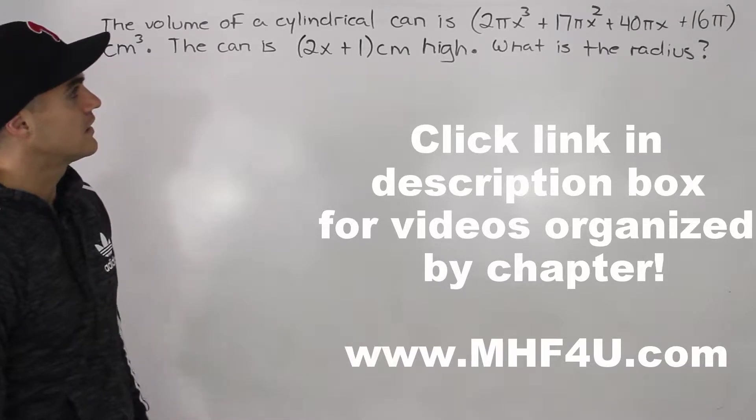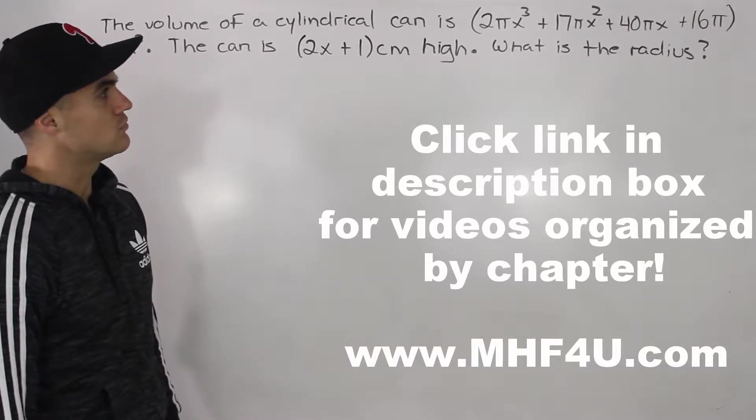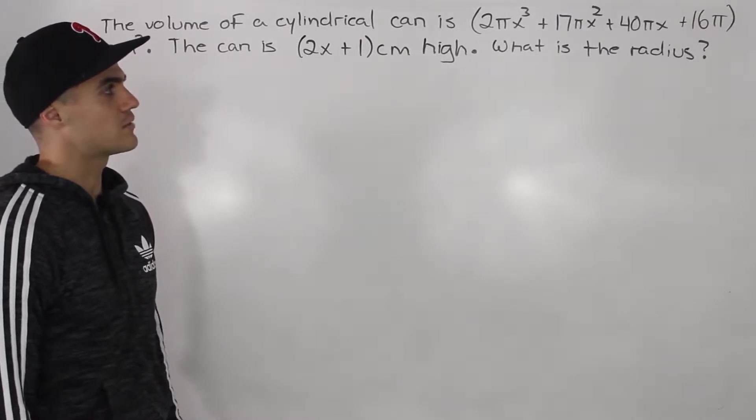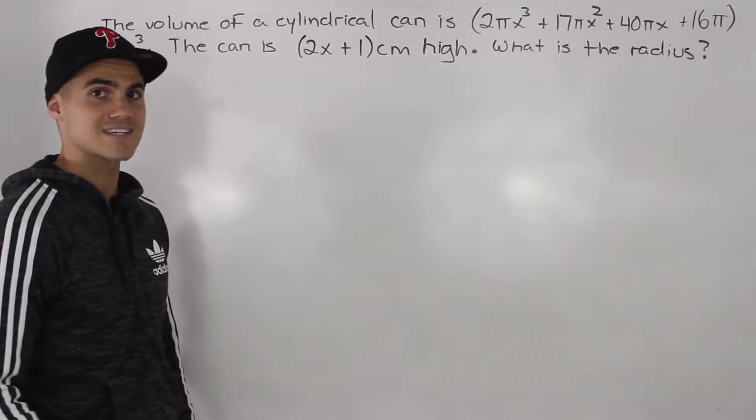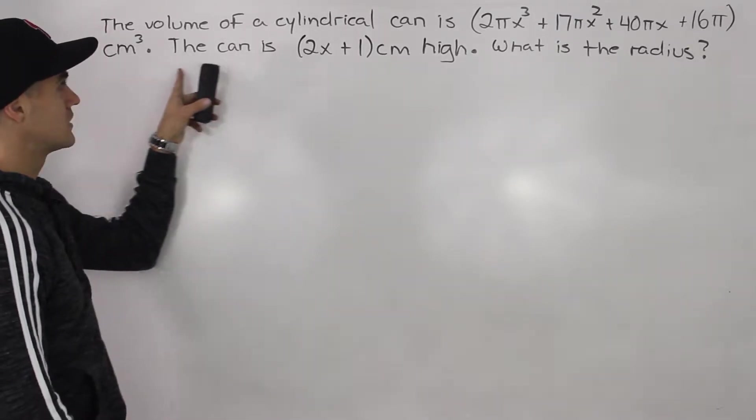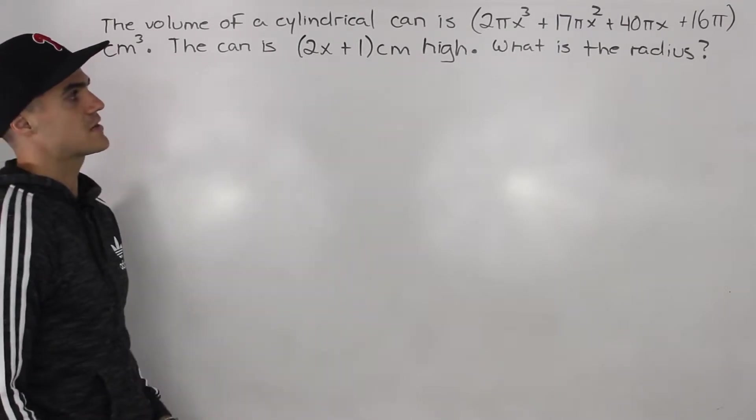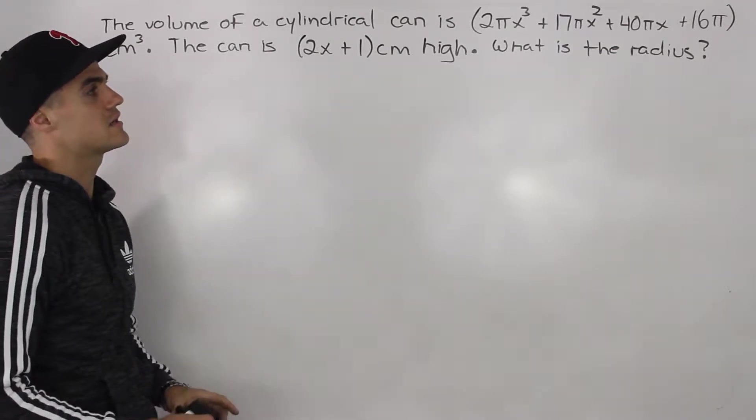The volume of a cylindrical can is 2πx³ + 17πx² + 40πx + 16π cubic centimeters. The can is (2x + 1) centimeters high. What is the radius?